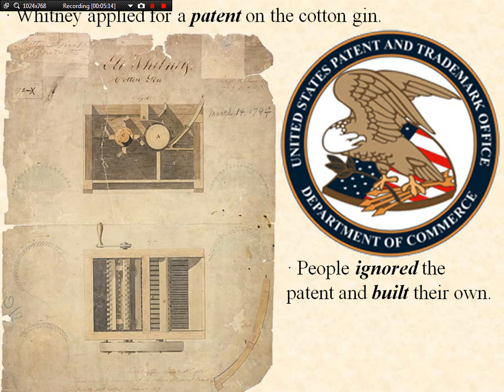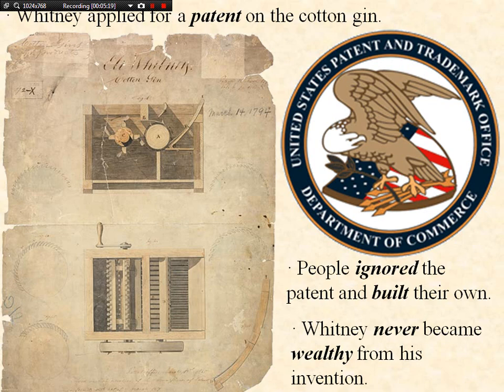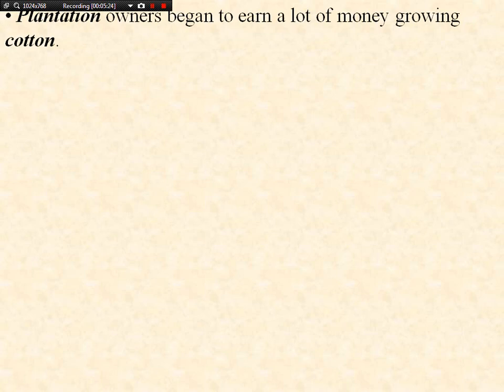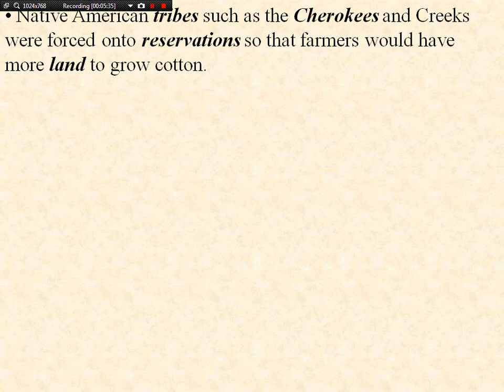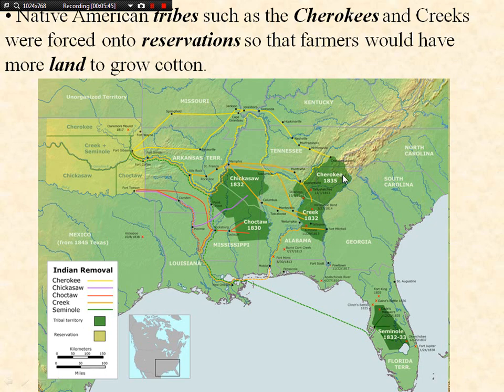Plantation owners began to earn a lot of money growing cotton, which caused farmers to increase their dependency on slave labor. Native American tribes such as the Cherokee and Creek were forced onto reservations so that farms would have more land to grow cotton. As the nation expanded west, Native Americans were forced further west to make room for states like Alabama, Mississippi, and Louisiana to grow cotton.